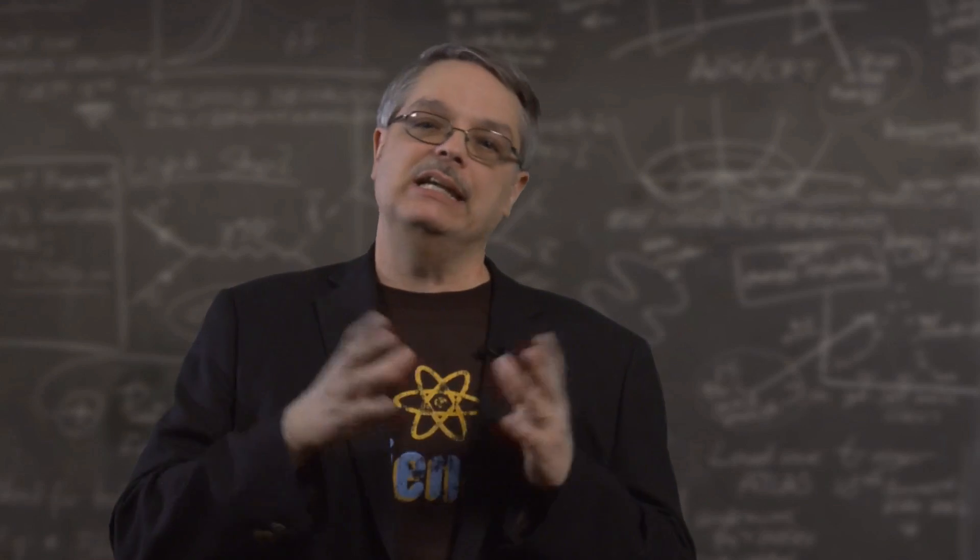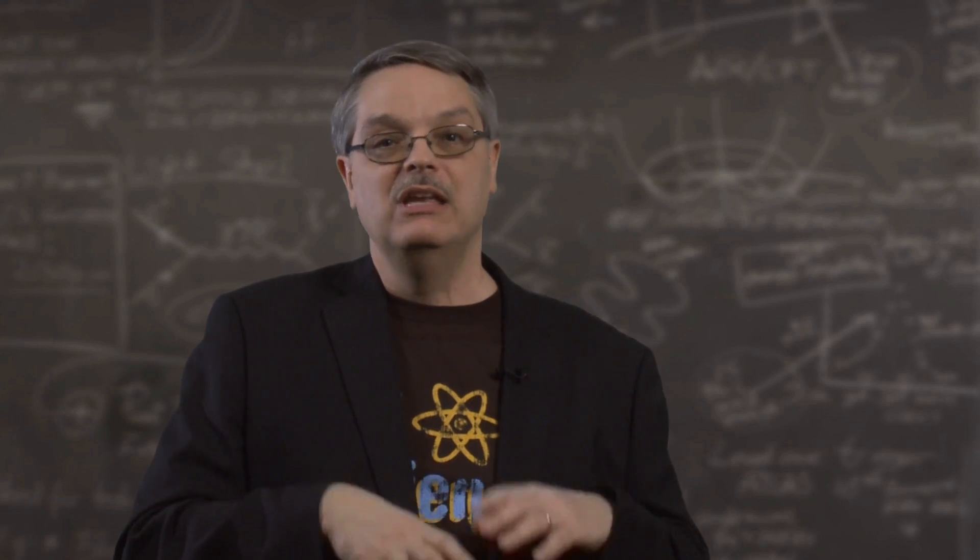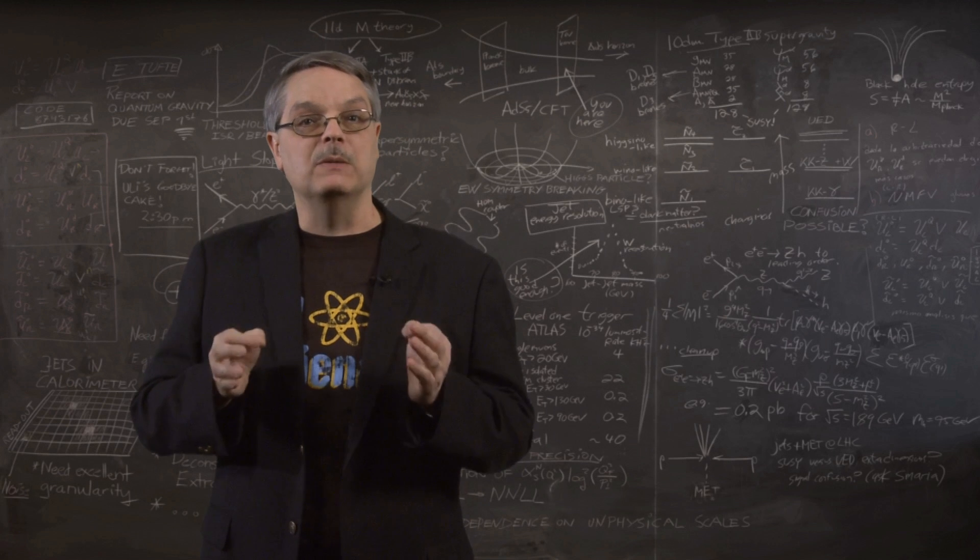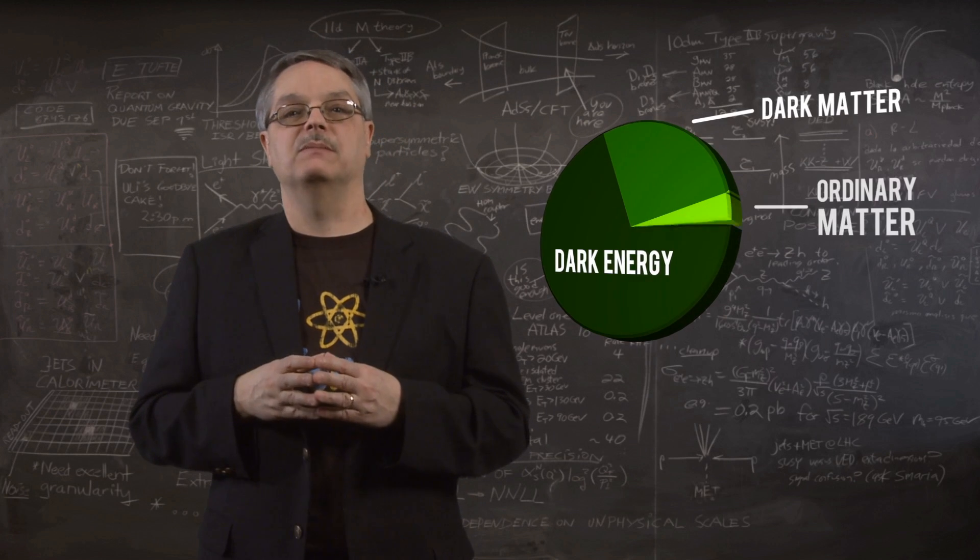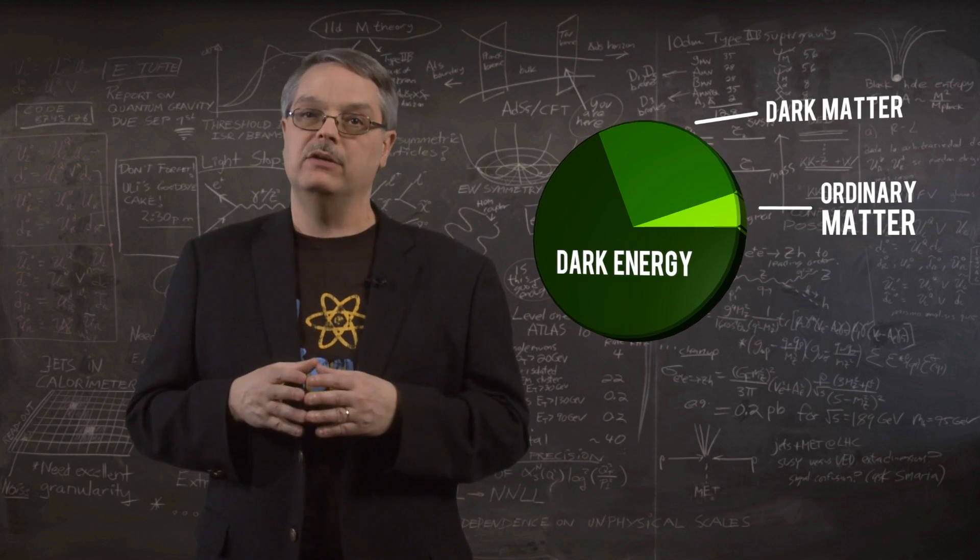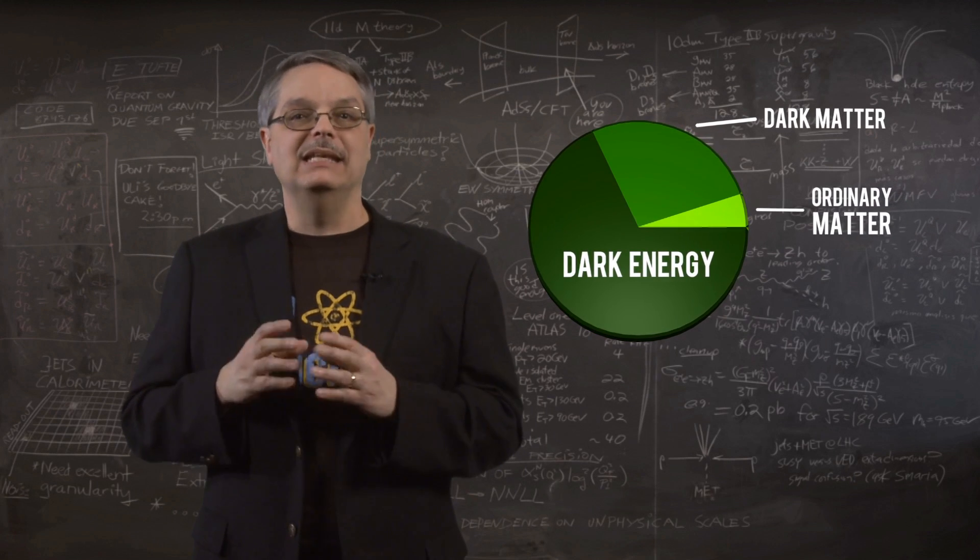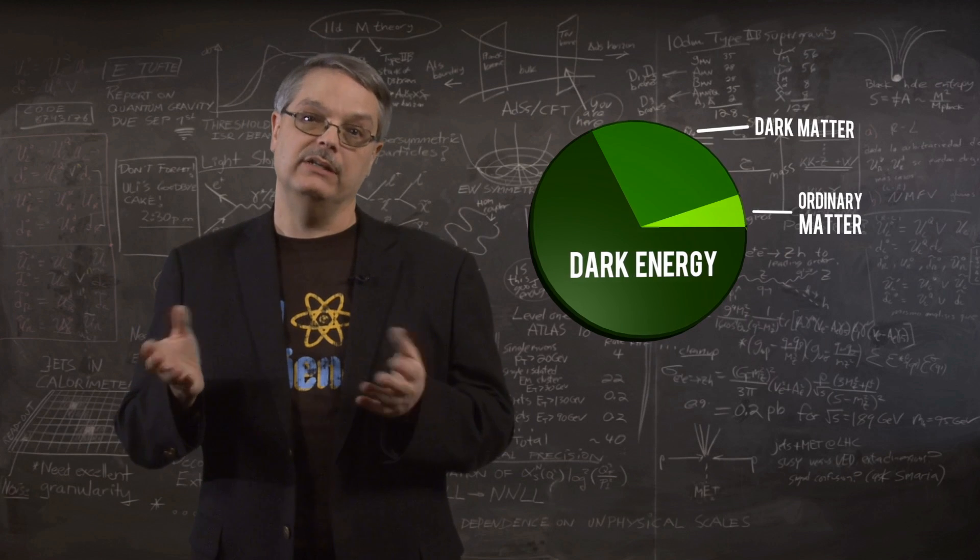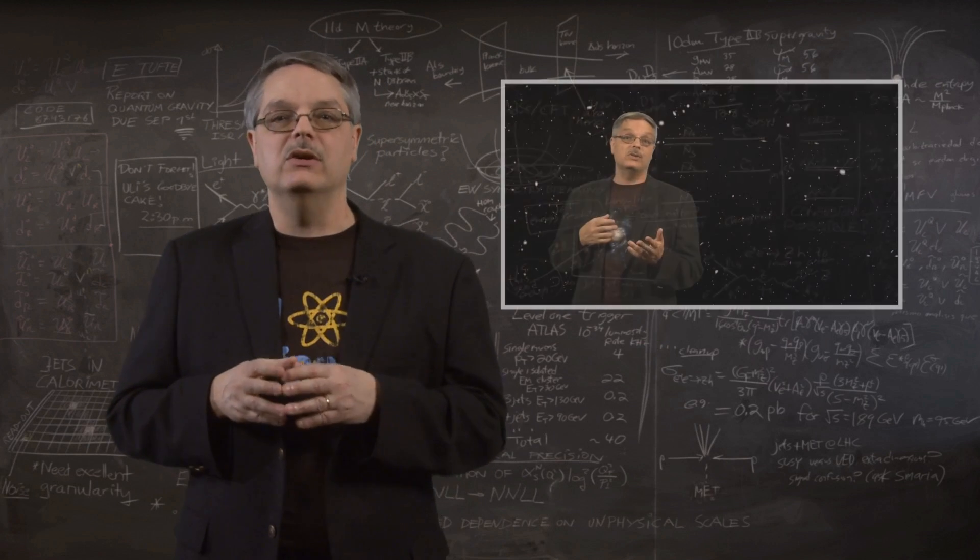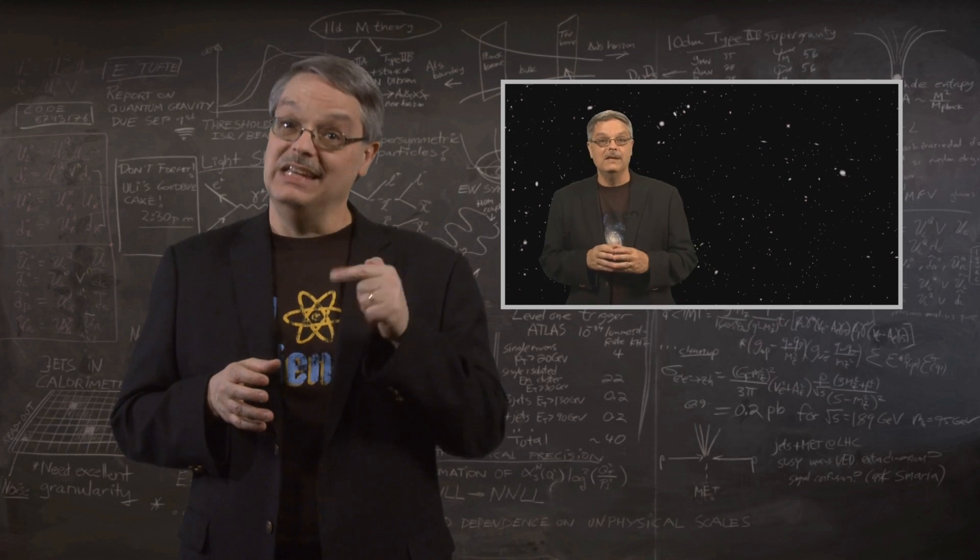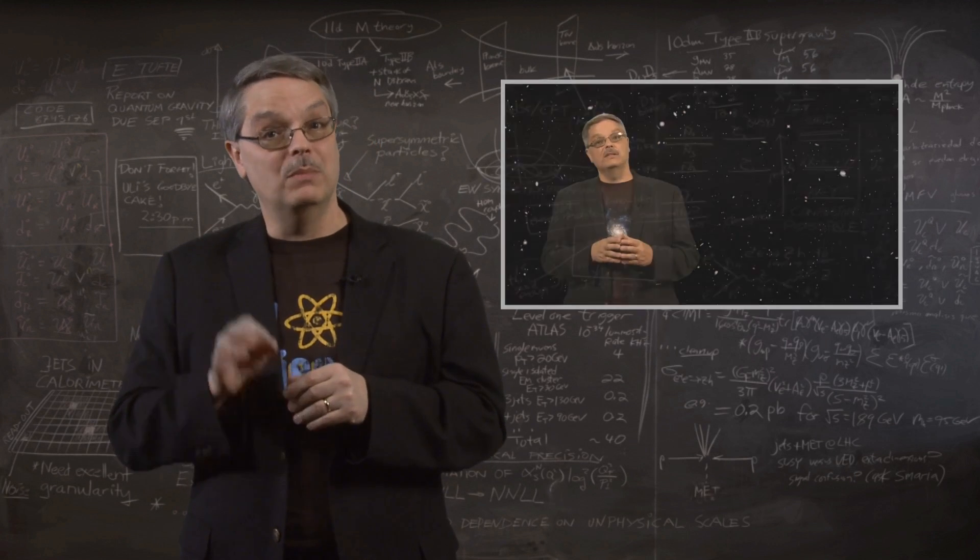So what is the other 95 percent and how is it that we've missed finding it? Scientists think that the universe is composed of three different substances. Five percent is ordinary matter, 27 percent is a substance called dark matter, and 68 percent is called dark energy. In another video I talked about why we believe in this substance called dark matter. In this video I want to tell you about dark energy.